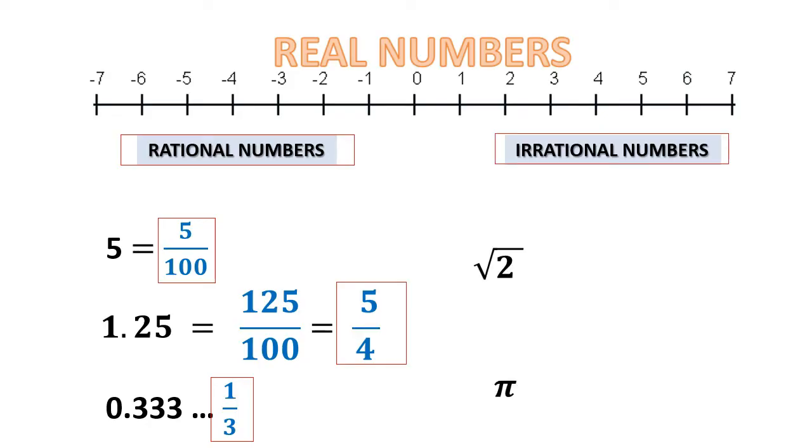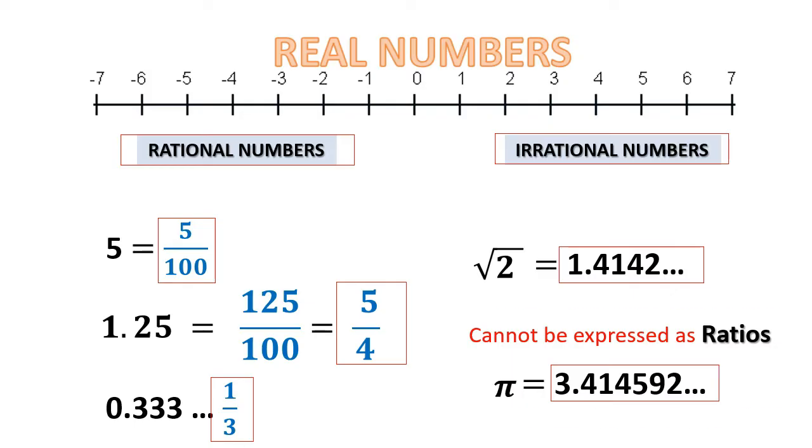Irrational numbers, on the other hand, cannot be expressed as a ratio of two integers. And when we represent them in decimal notation, they are non-terminating, non-recurring decimals.